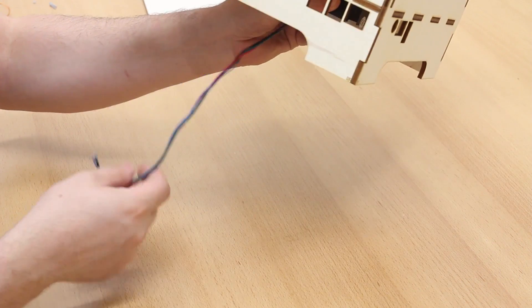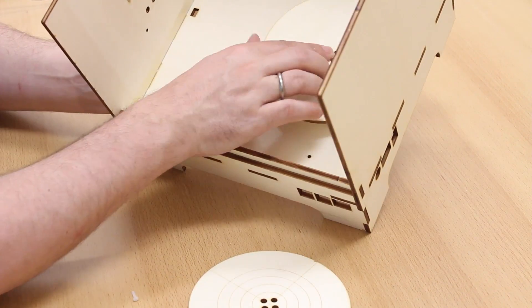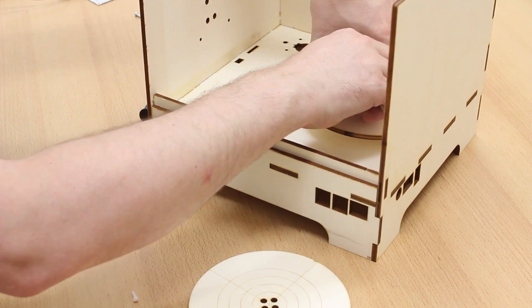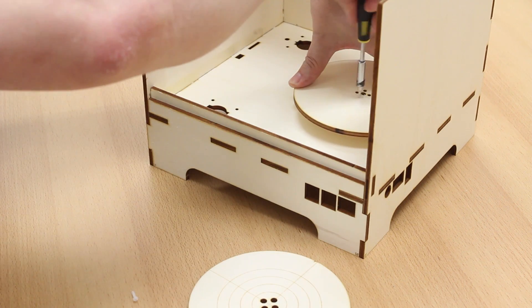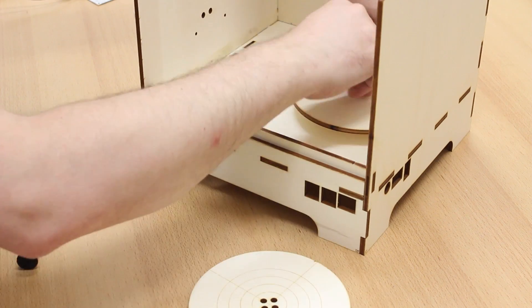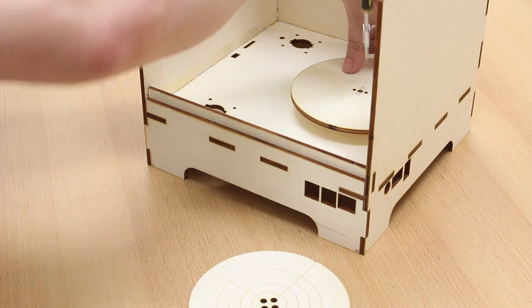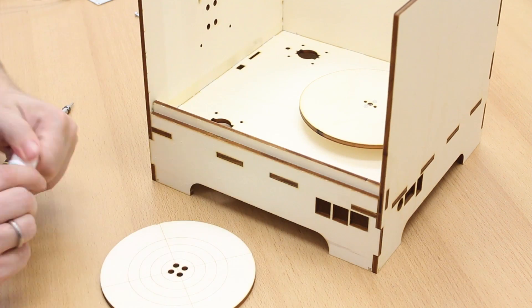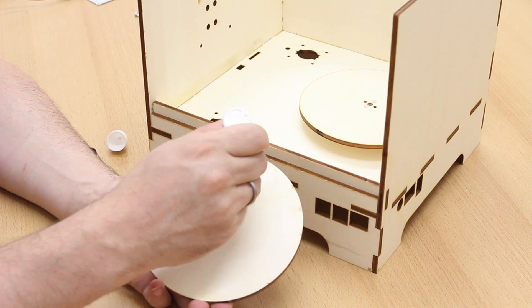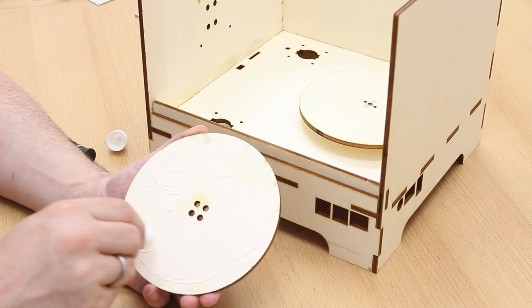Now we can prepare the turntable. It has two pieces. The bottom piece just screws into the mounting plate. And the upper part will be glued to the bottom. So apply glue and then glue it together.